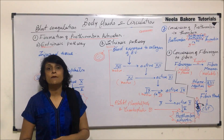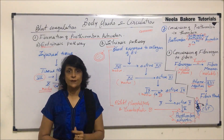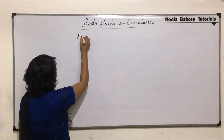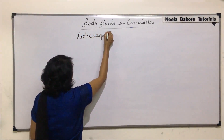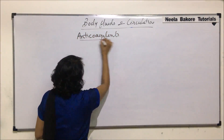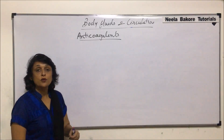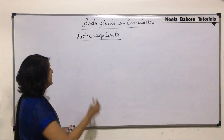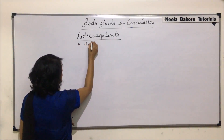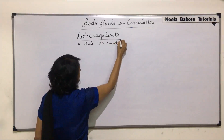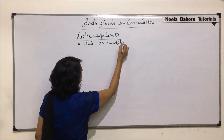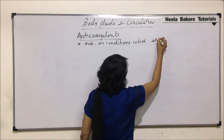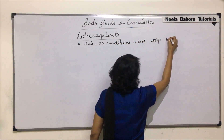The last thing to discuss here is anticoagulants. Anticoagulants are those substances or conditions which prevent or stop blood clotting. So these are substances or conditions which stop blood clotting.